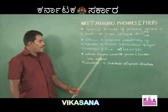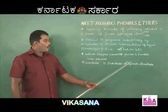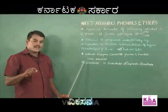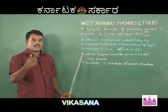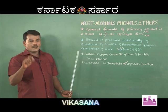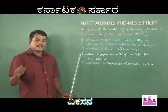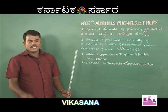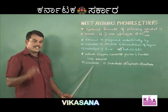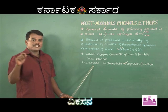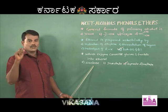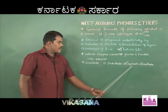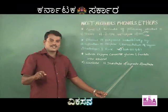Both zymase and invertase are produced by yeast. Diastase is an enzyme used to hydrolyze starch, and it is generally extracted from germinated barley. Alcohol manufactured from starch is also called grain alcohol. Invertase and zymase are both extracted from or produced by yeast cells.